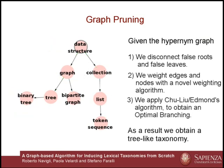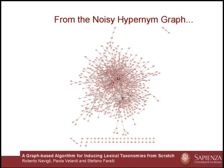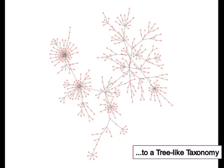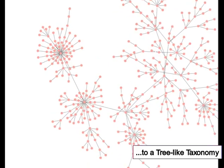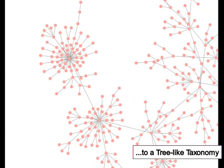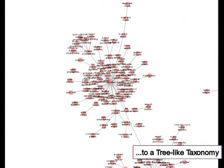As an output, we obtain a tree-like taxonomy. Here we show the artificial intelligence noisy hyponym graph obtained starting from the corpus of the IJCAI 2009 conference proceedings, and its corresponding tree-like taxonomy obtained after the graph pruning phase.